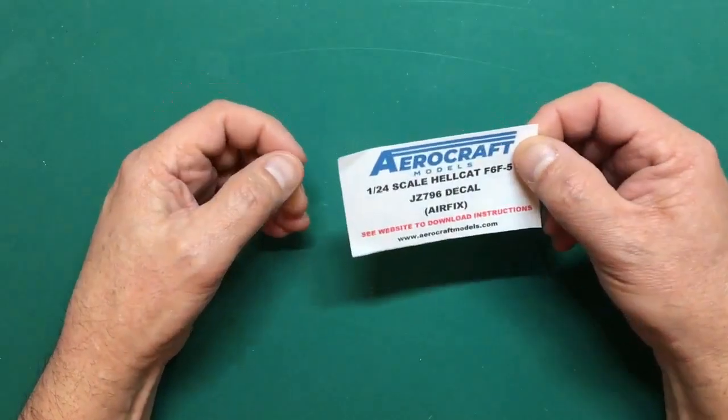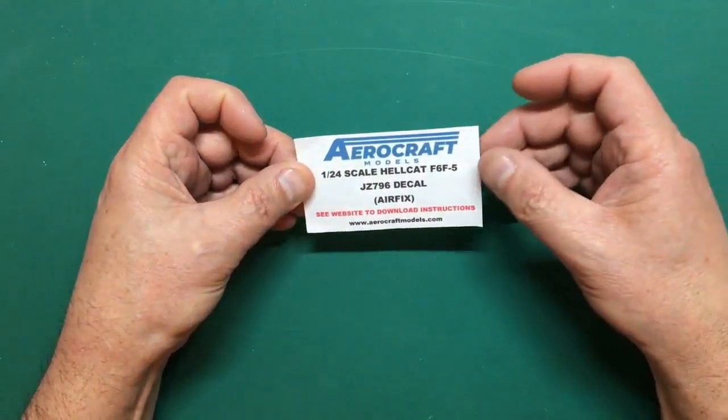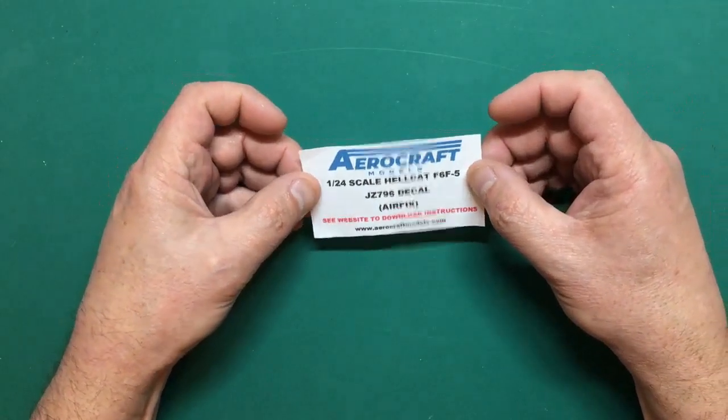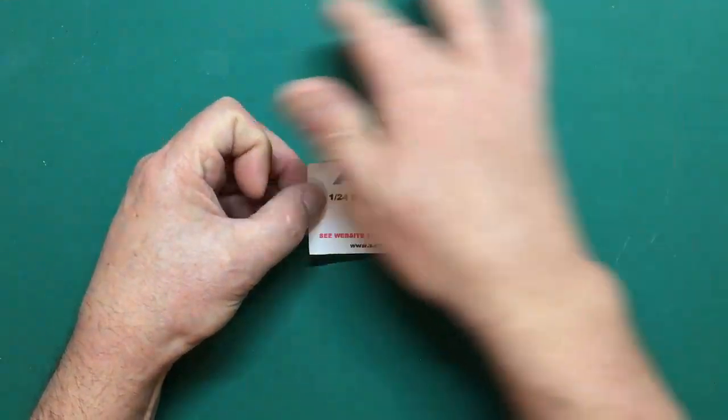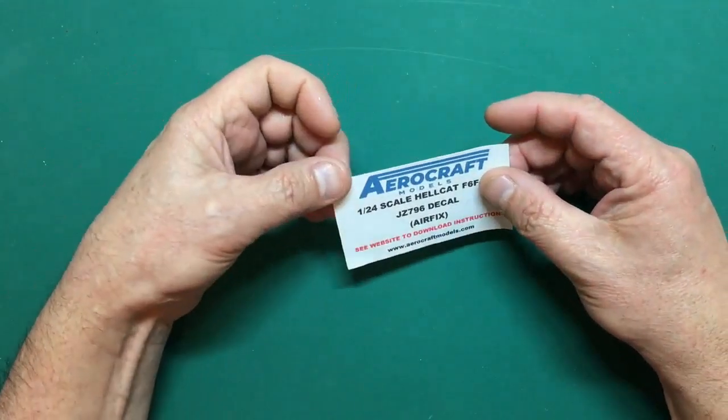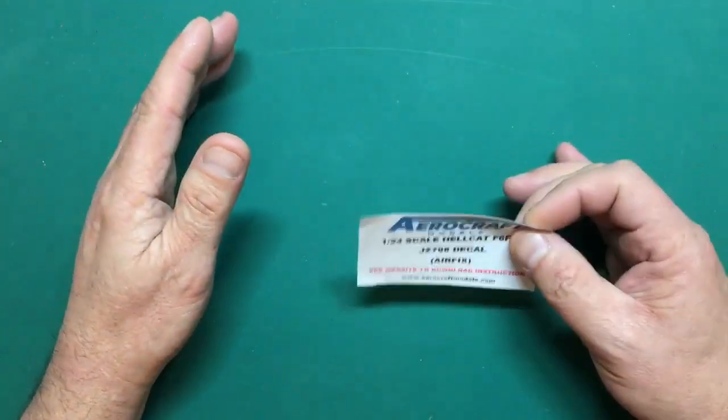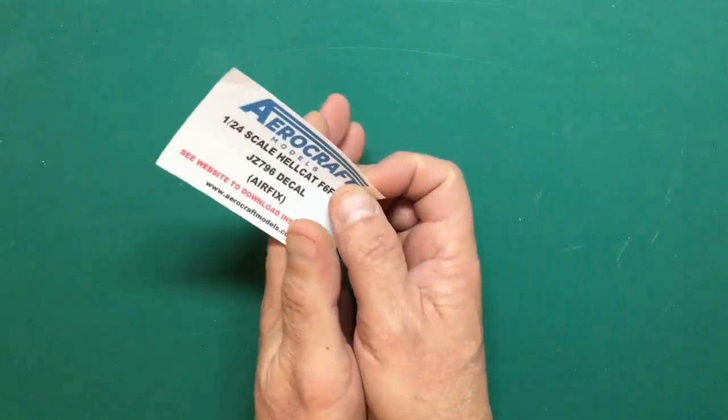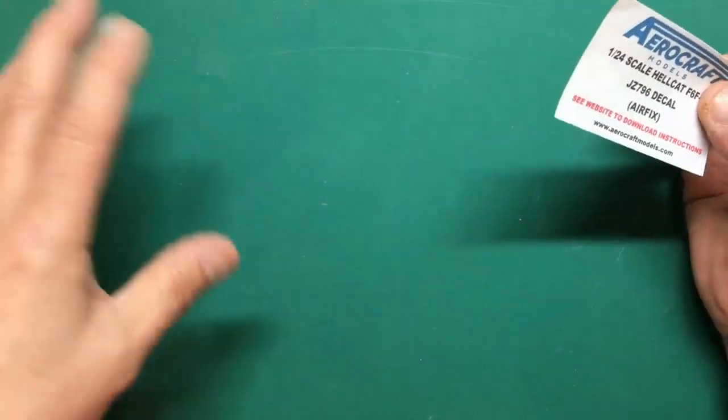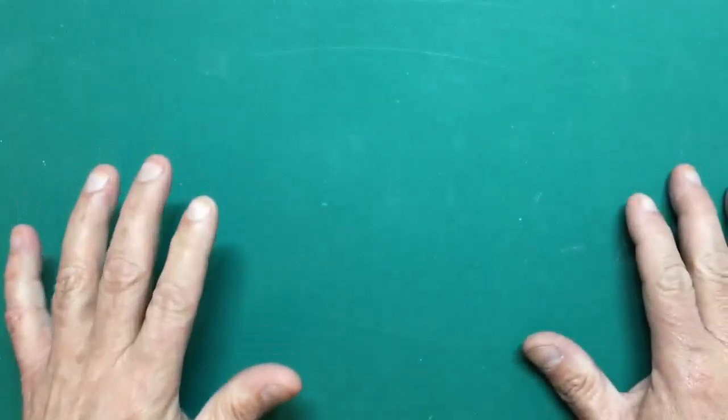Go over to www.aircraftmodels.com, have a look at the 1/24 scale shop and you'll see all the sets there. You can also download the instructions. Across the top of the page in the middle it says download instructions. As we go through this I will flash up the instructions and the decal scheme to show you decal placement.